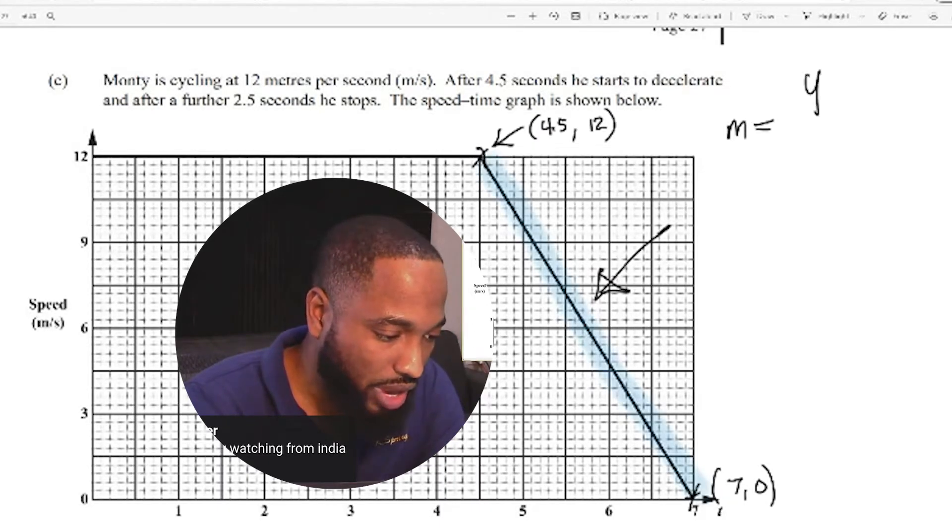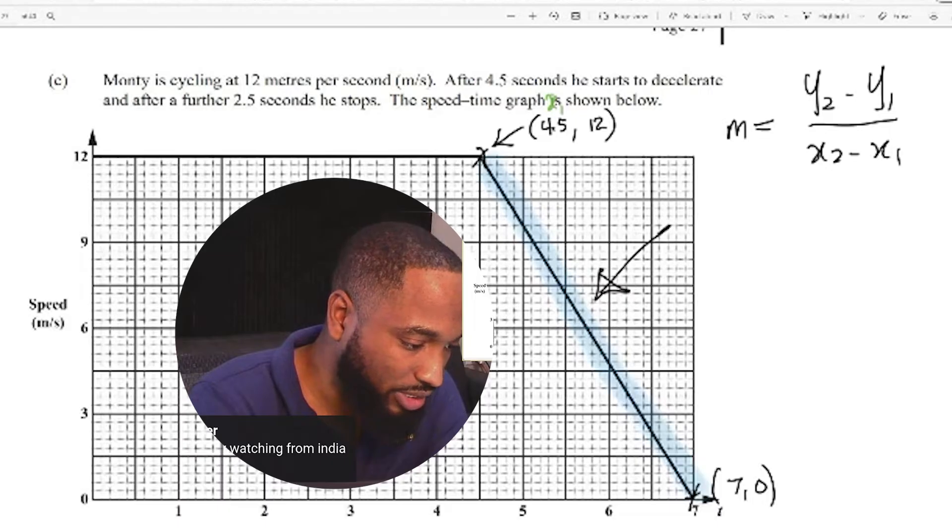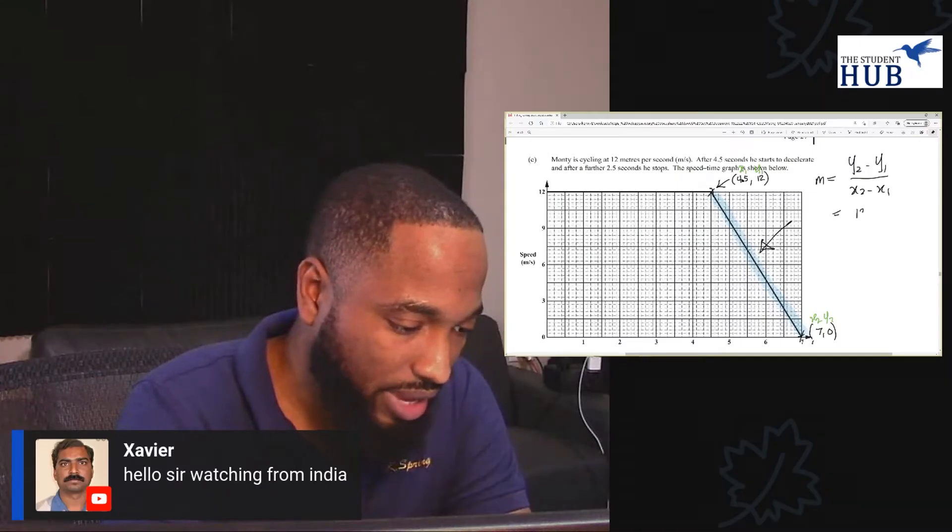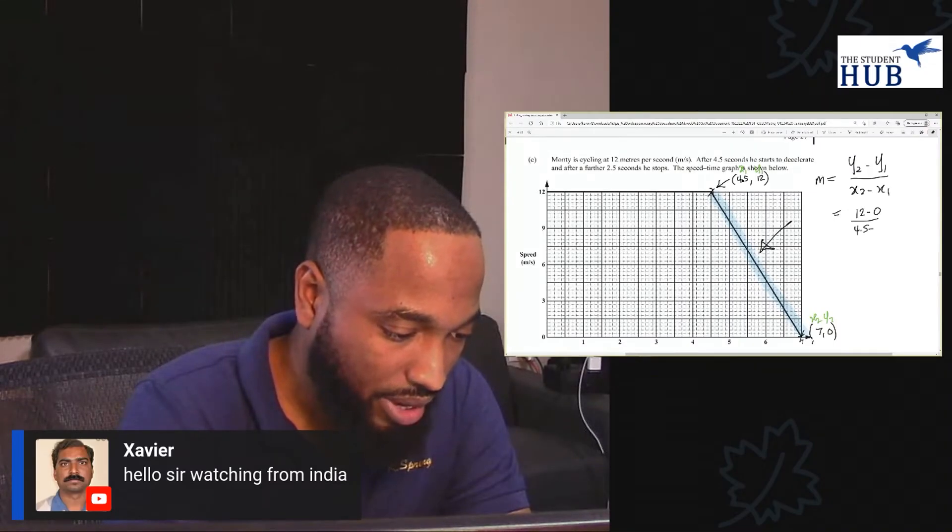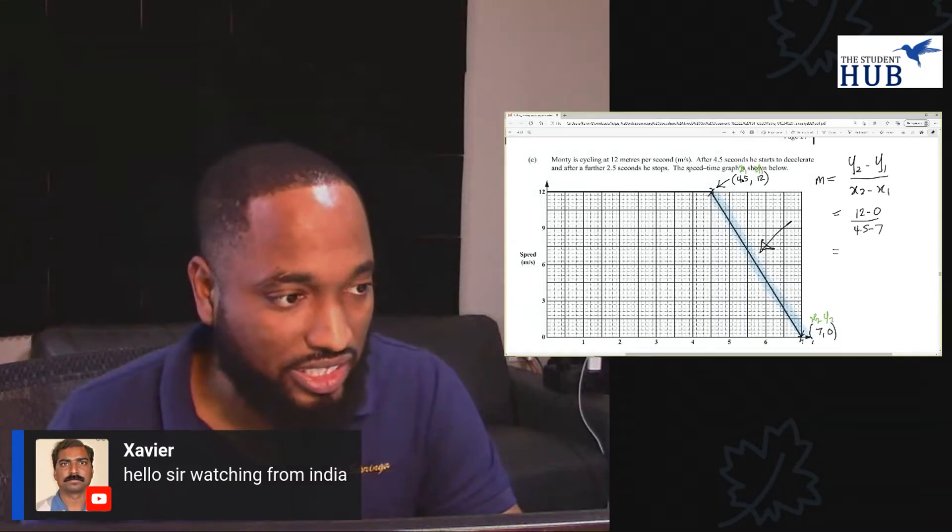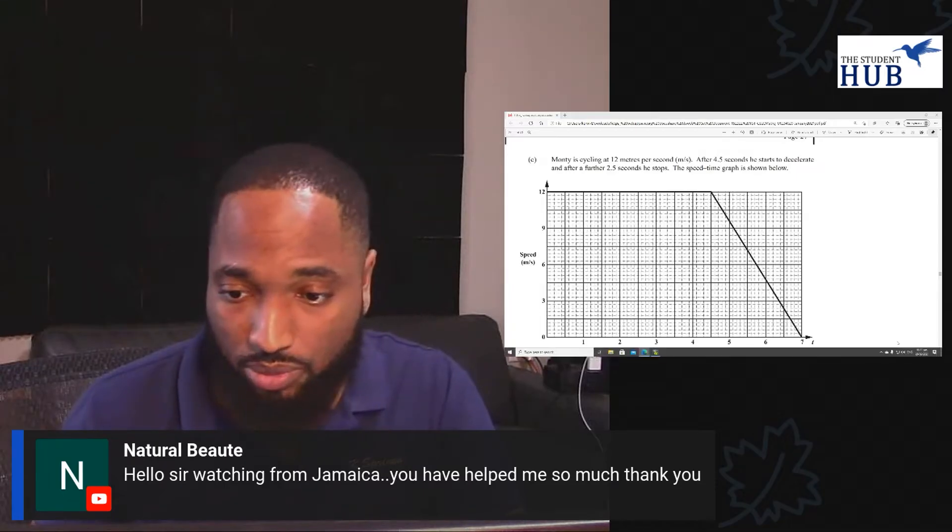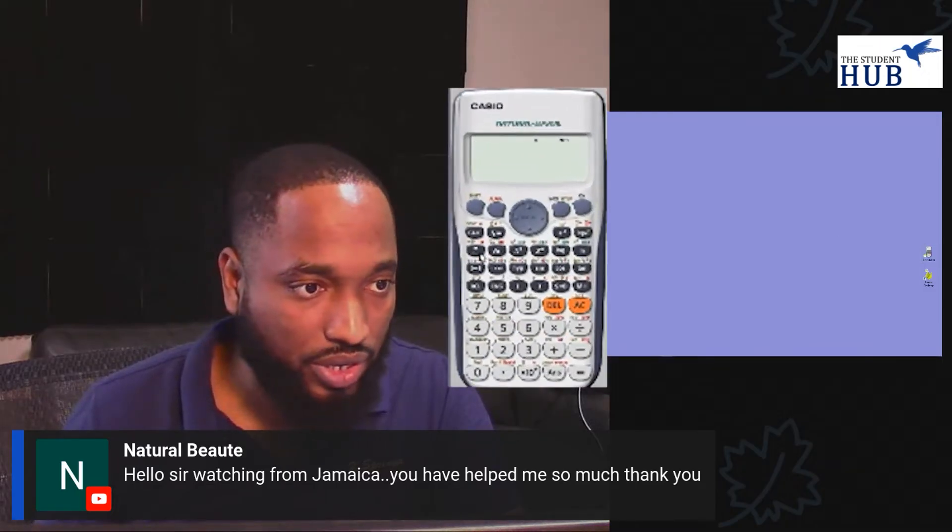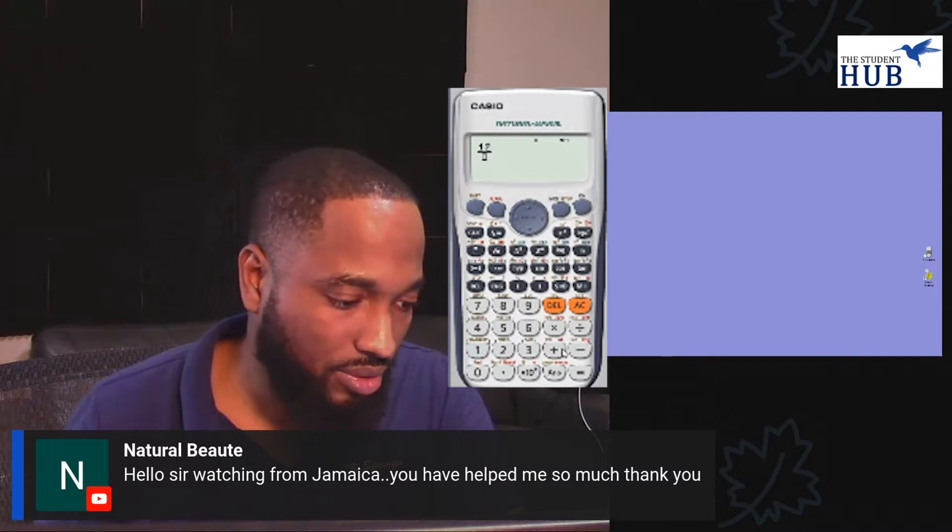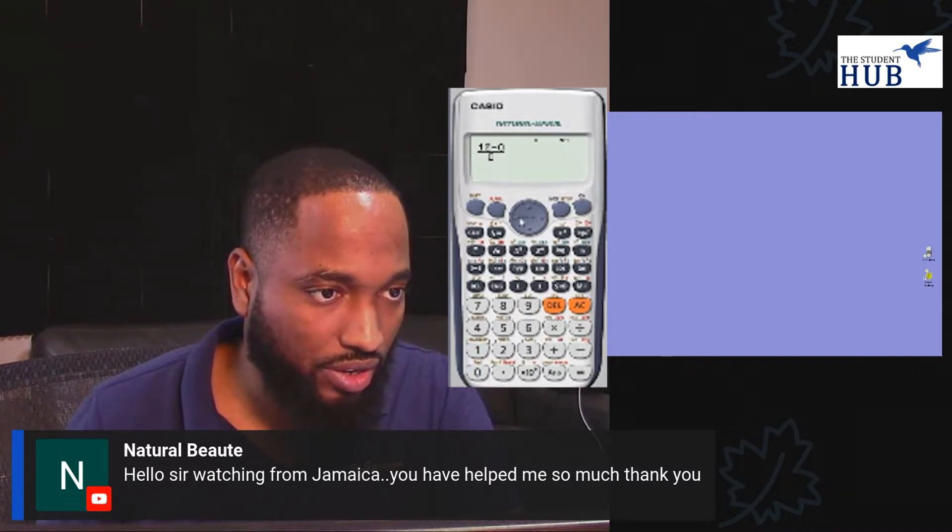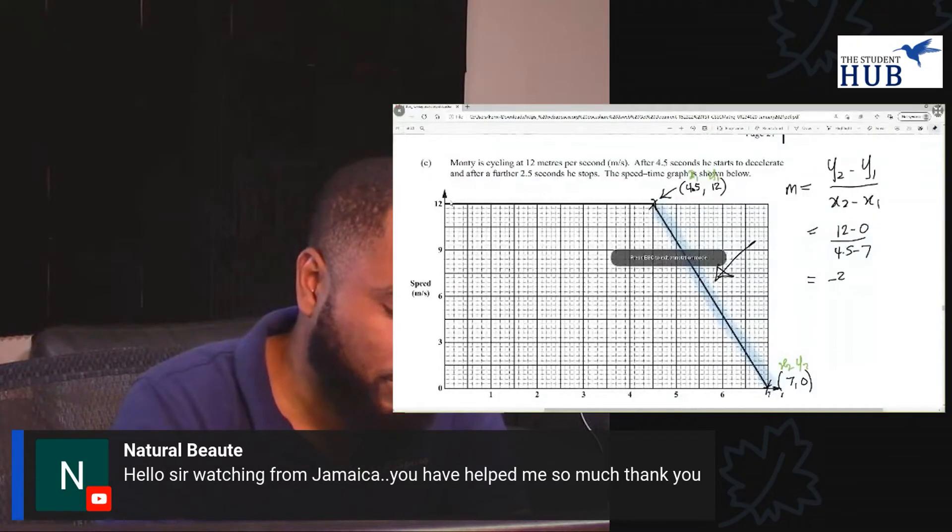So we're going to find the gradient. Let's use M equals Y2 minus Y1 over X2 minus X1. And we can indicate that we want this one to be X1, Y1. This one to be X2, Y2. Or it can be the other way around. It doesn't matter. So 12 minus 0 over 4.5 minus 7. We're getting the reason we're getting a negative answer is because it decelerated. Shout out to Natural Butte. So what I'm going to do is bring up my calculator.